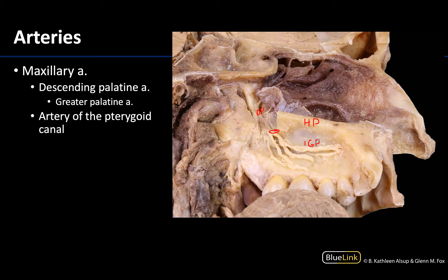Another artery also traveling with the same-name nerve — which makes the two hard to differentiate — is going to be the artery of the pterygoid canal. This artery is going to be in close approximation with the pterygopalatine ganglion, right smack dab in that pterygopalatine fossa. If you have this close association coming in posteriorly and heading towards the pterygopalatine ganglion, you're pretty safe to ID this as the artery of the pterygoid canal, named because it travels through the pterygoid canal to reach this region.